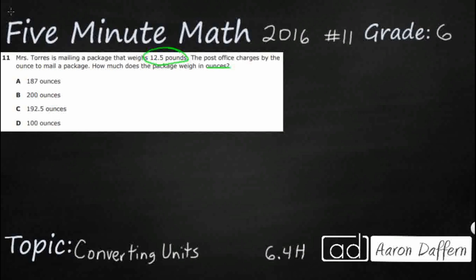So we need to change this 12.5 pounds, and I'm going to use the abbreviation for pounds LBS, which makes no sense at all because there's no L or B in pounds, but that's what the abbreviation is, equals blank ounces, and so we're going to use OZ to represent ounces.